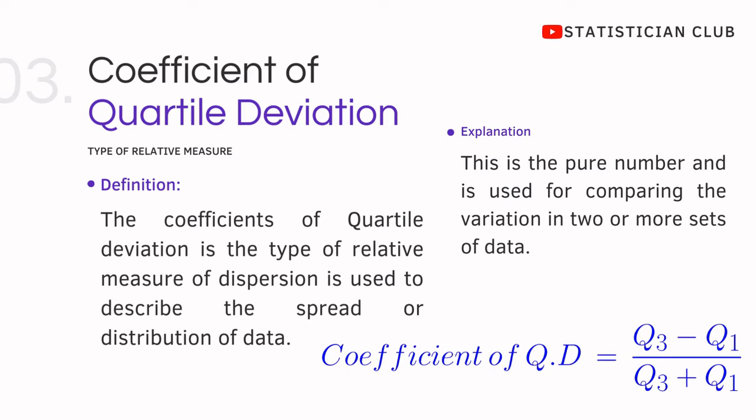This is a pure number and is used for comparing the variation in two or more datasets.